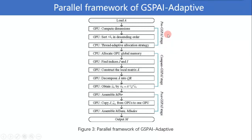First, in Pre-GSPAI stage, we define the sparsity of M, compute the dimensions, and assign the thread number adaptively to each column of M. In this part, a new thread allocation strategy is proposed, which includes the following steps.